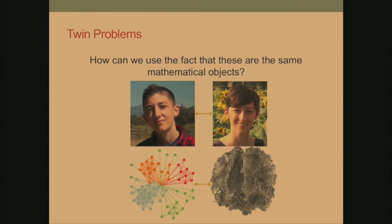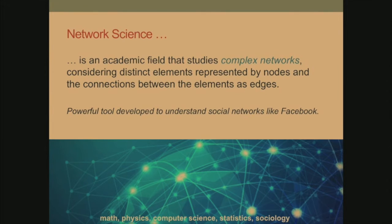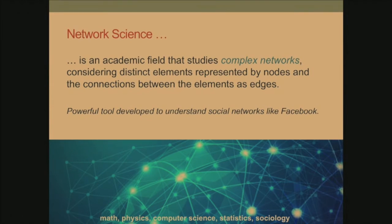What we're going to do is treat these two as mathematically similar objects and pull from a new set of science called network science, which has been created basically to study social networks like Facebook. This field is an academic field that studies complex networks, considering the connections between different nodes or components of a system. The idea is that the pattern of nodes and edges really matters — there are different patterns in different systems, and that matters for how the system can perform. It brings together math in an area called graph theory, physics, statistical mechanics, computer science, statistics, and specifically sociology.